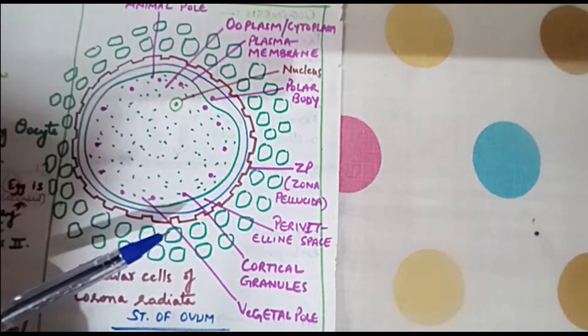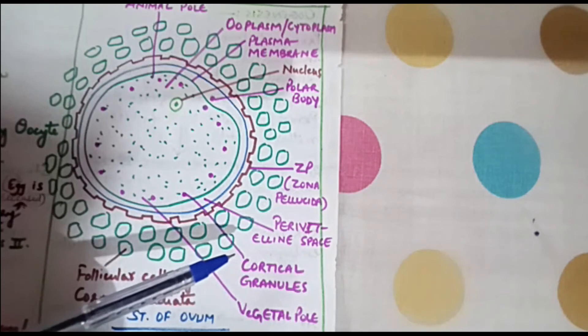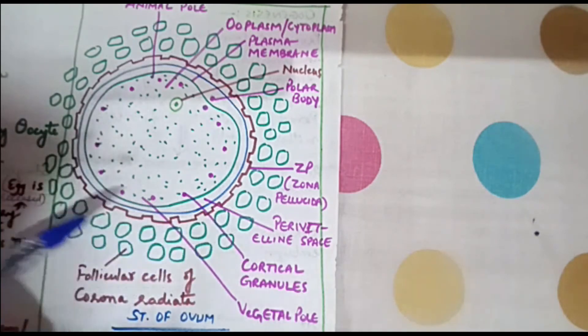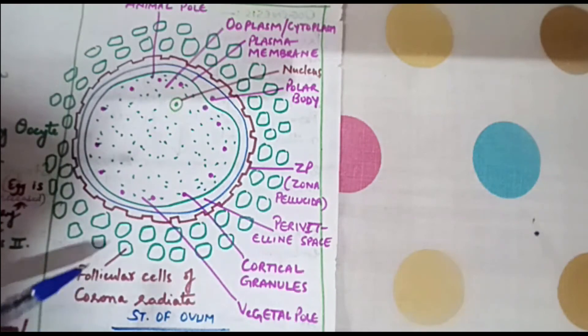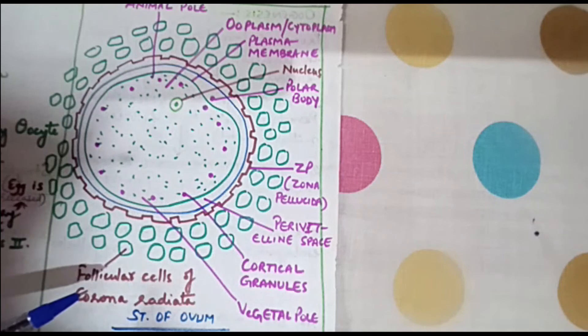From the outside there is a layer of cells which are known by the name of follicular cells of corona radiata. There are a number of cells which are the follicular cells of corona radiata.